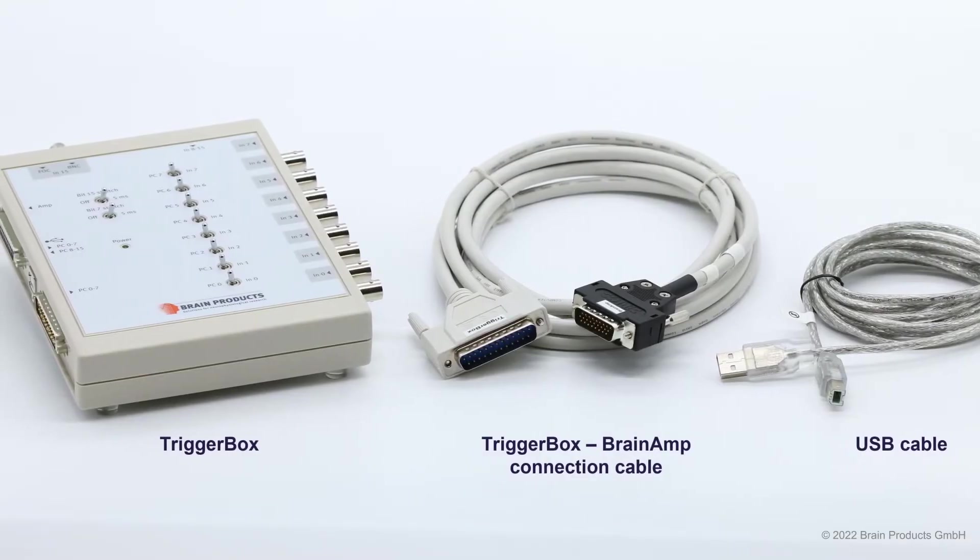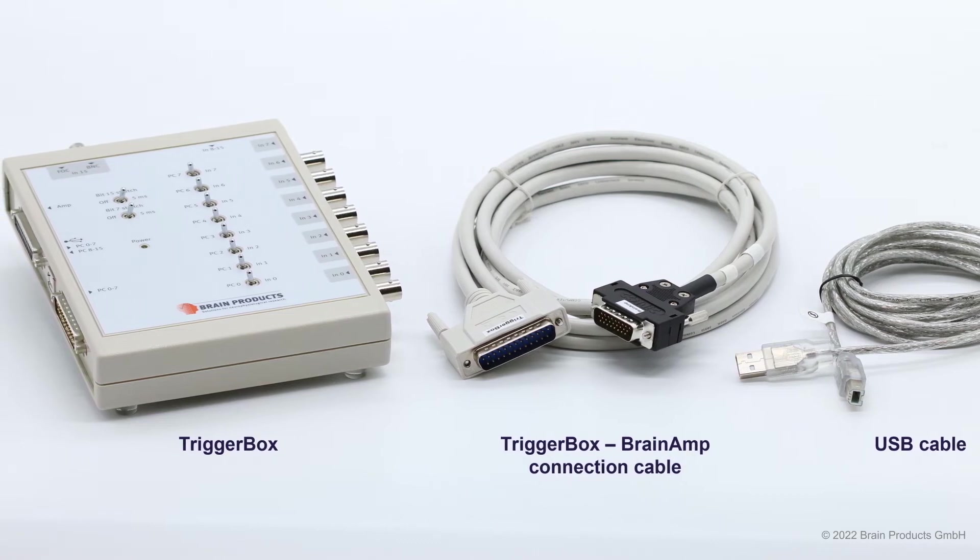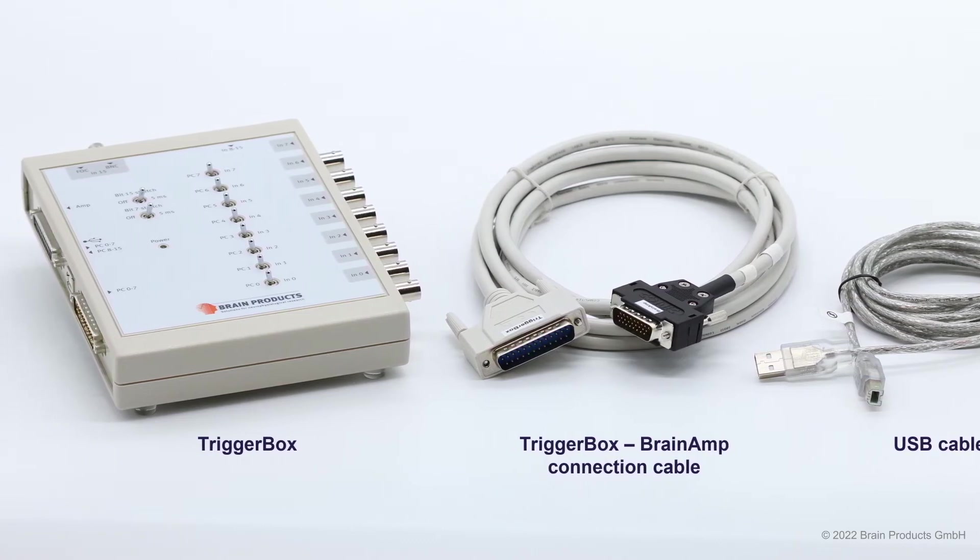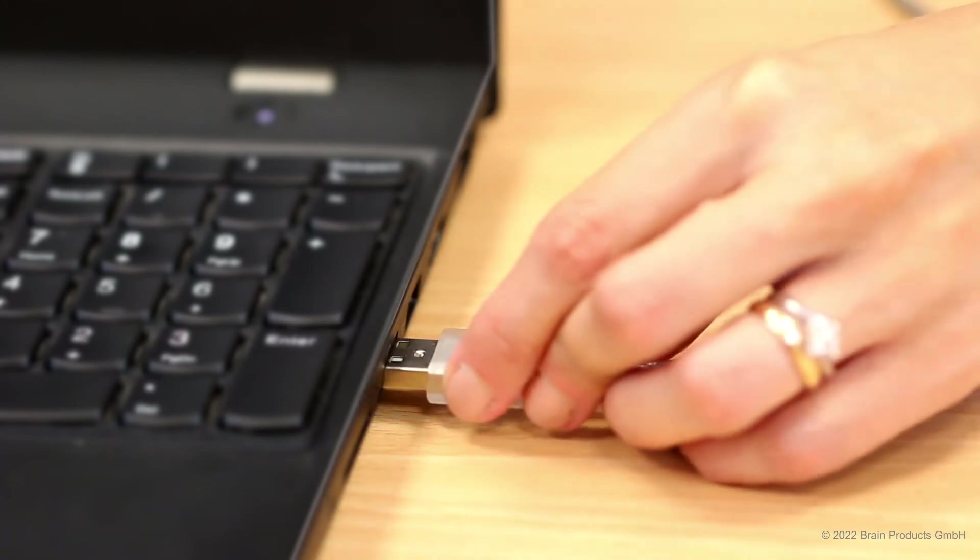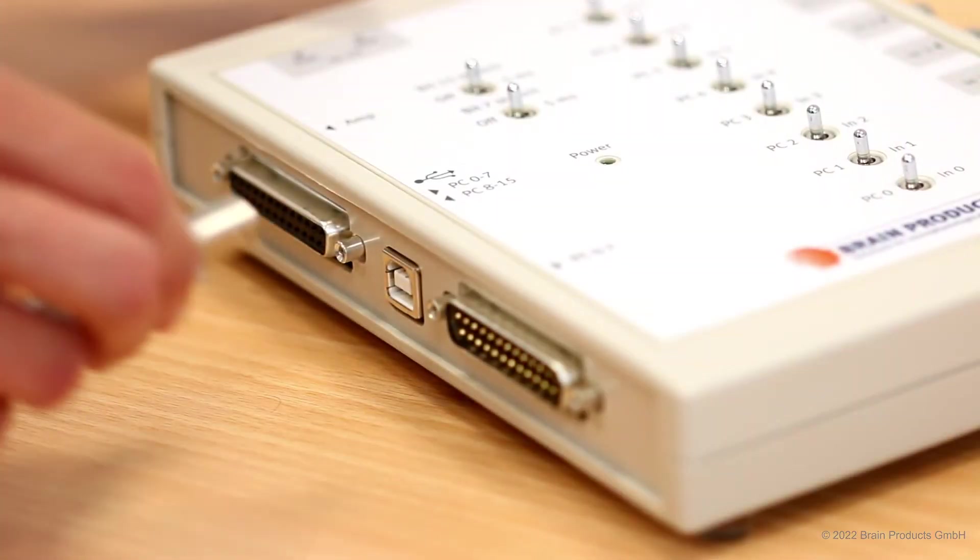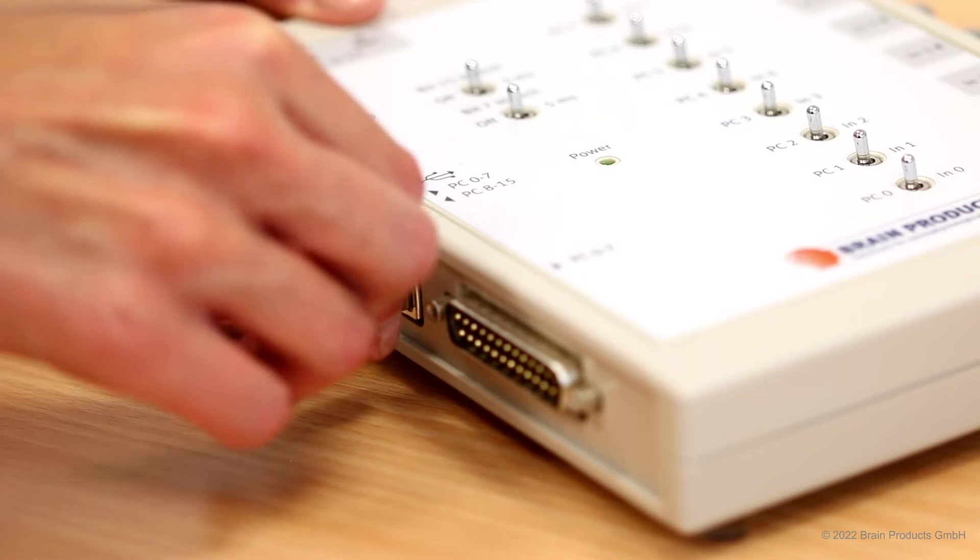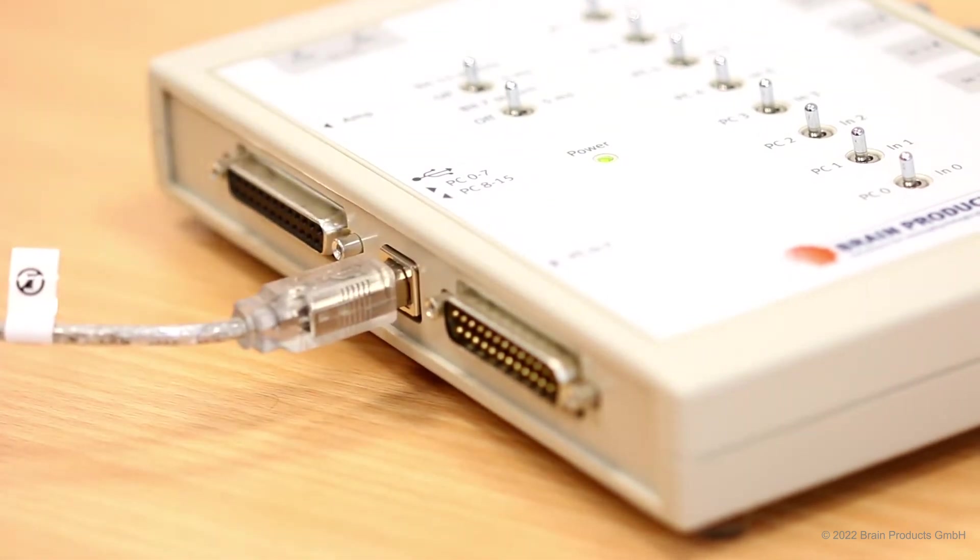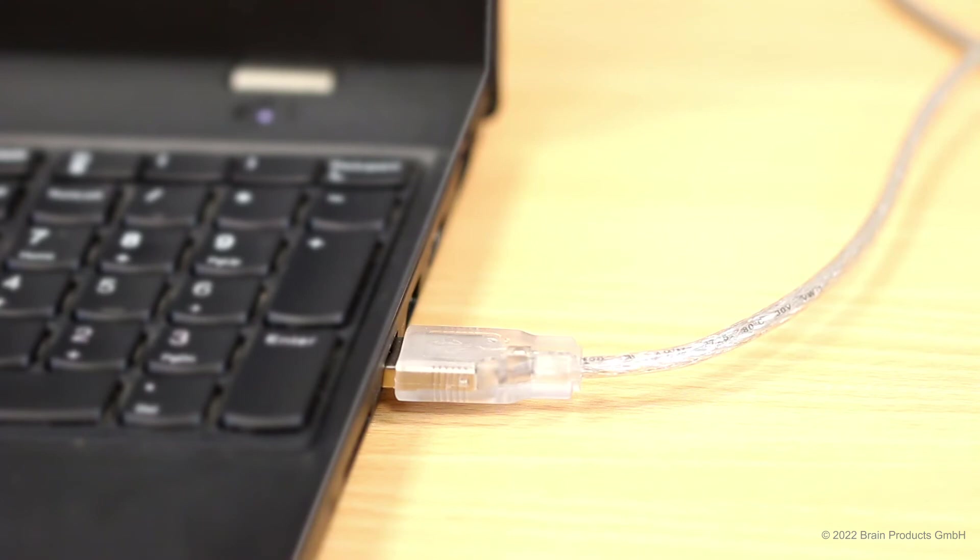If you need to send triggers or markers during your experiment, you might also have our trigger box in your lab. In this case, first connect it to a power supply via the USB type B input port. Frequently, the power supply will be the USB port of the computer running your experimental paradigm.